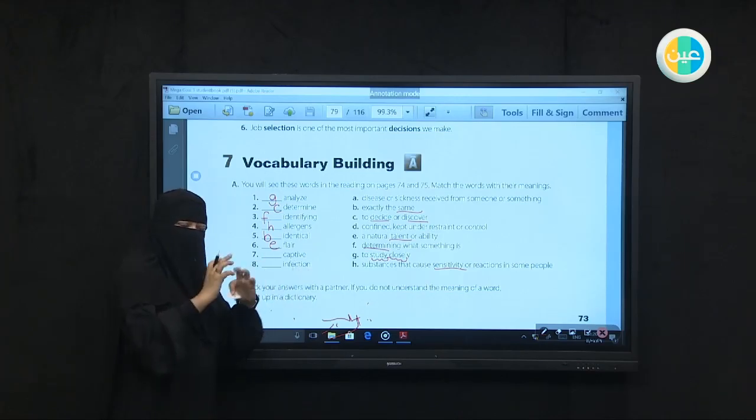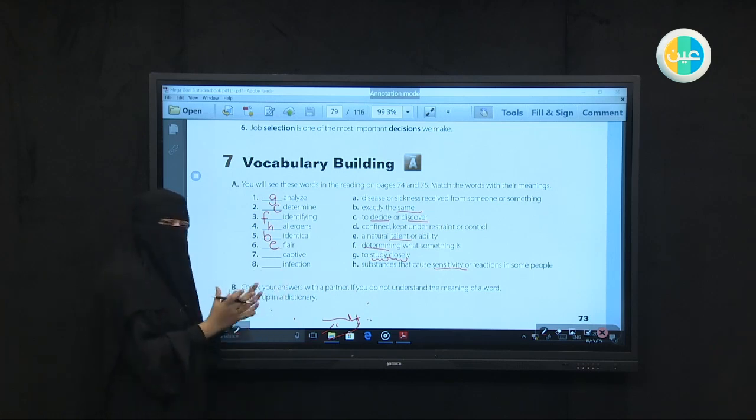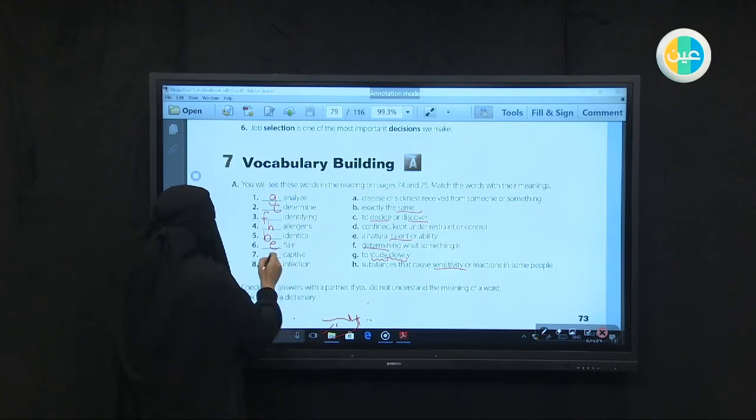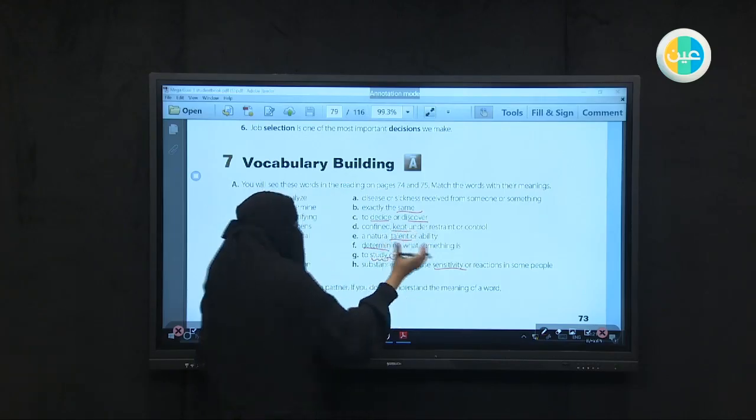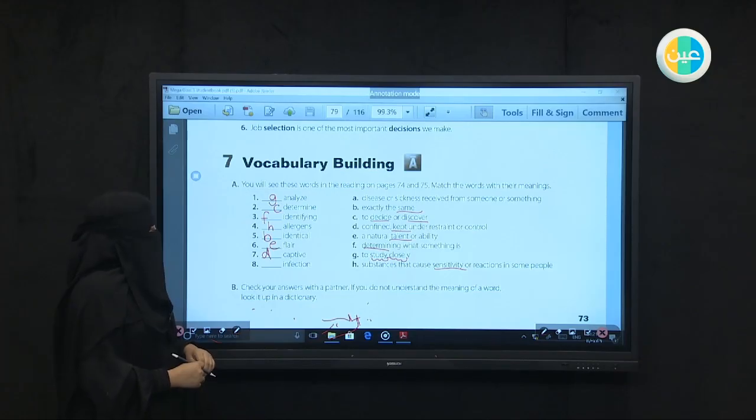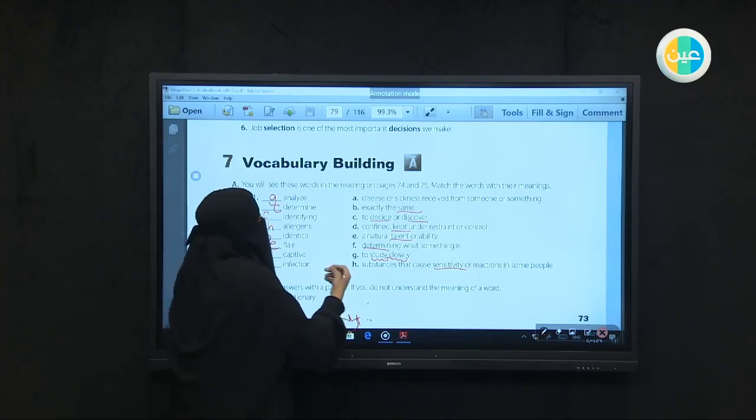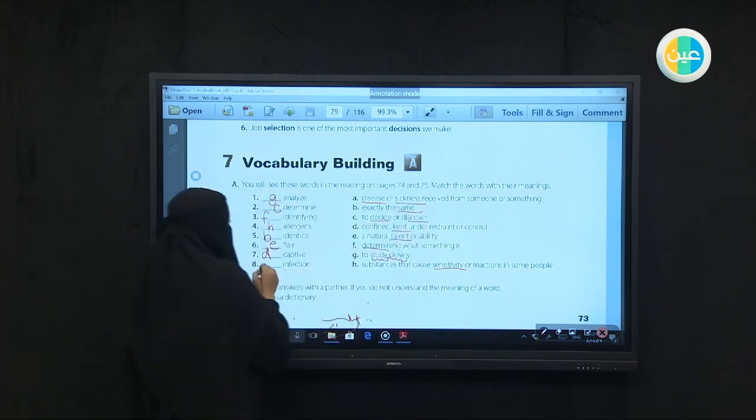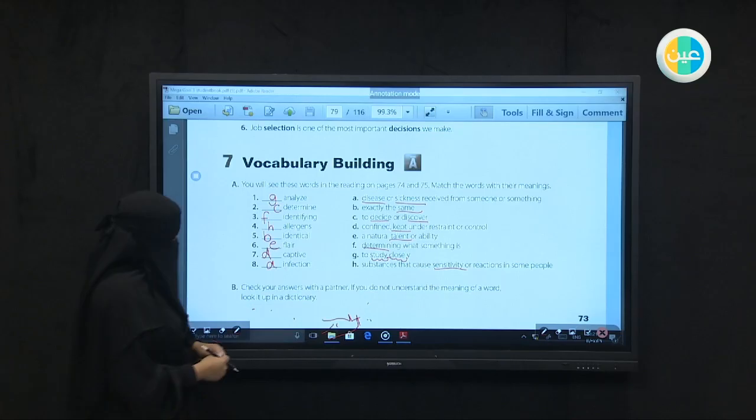Number 7, captive - from the word capture. When someone catches something, obtains it, captures it, and keeps it in a limited environment. Like for example animals in the zoo. They are considered captive. The answer will be D - kept in a certain place. Number 8, infection - the disease or inflammation that results from some illnesses. So this will be A disease. You can connect it with disease or sickness. This is what you have here for your vocabulary.